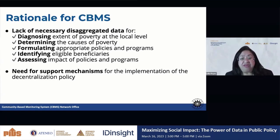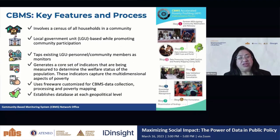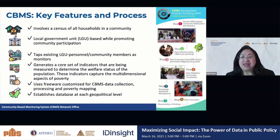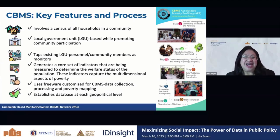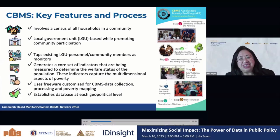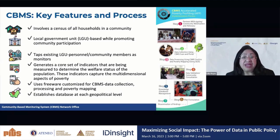Moreover, there was a need for support mechanisms for the implementation of the decentralization policy. What are the key features of CBMS? One is that it involves a census of all households in the community. CBMS was designed to be a census so that it could be easily implemented by local government units who may not be familiar with sampling techniques and the statistical capacities needed to do sample surveys.